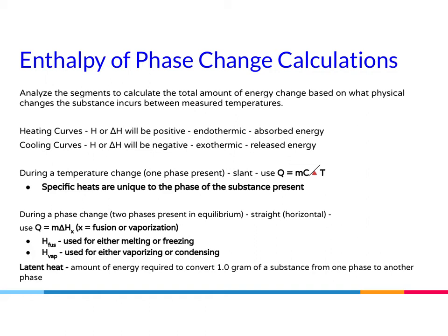During a temperature change — when you have one phase present, the slant on your graph — you're going to use Q = mcΔT. Specific heats are unique to the phase of the substance present, so the C value in joules per gram per degree Celsius will change whether you have a solid, liquid, or gas, because the intermolecular forces change. It requires a different amount of energy to heat or cool a substance based on which state of matter it is in.